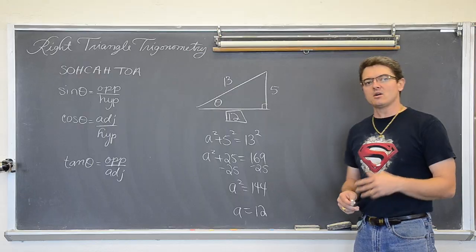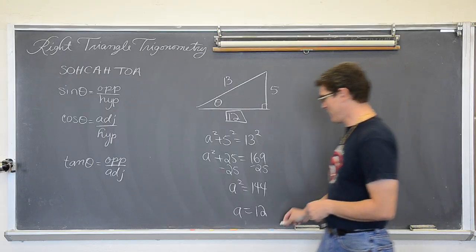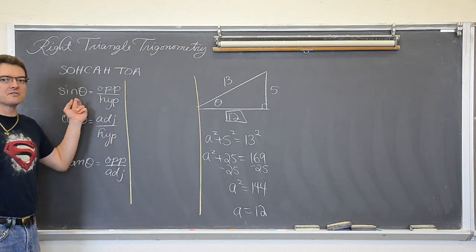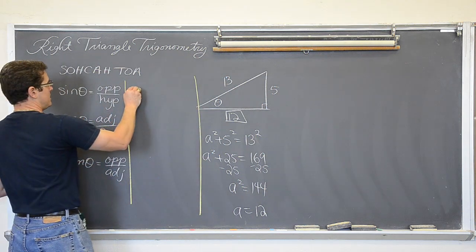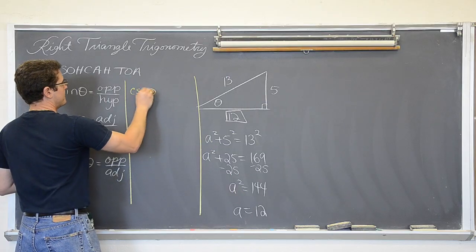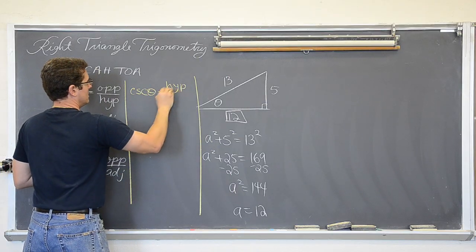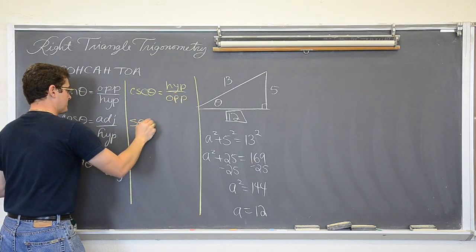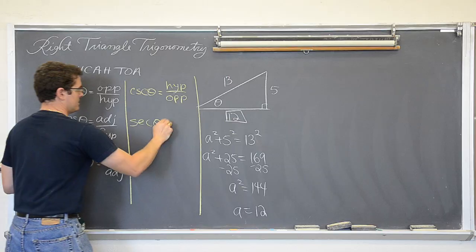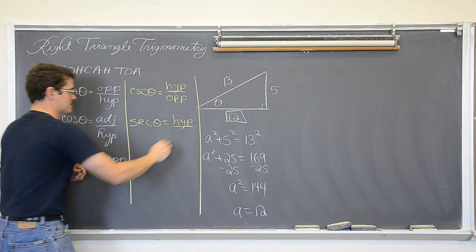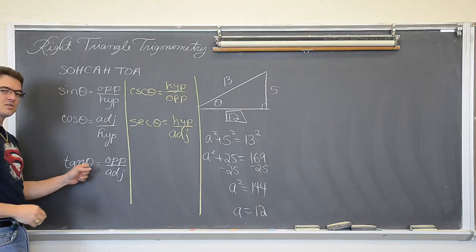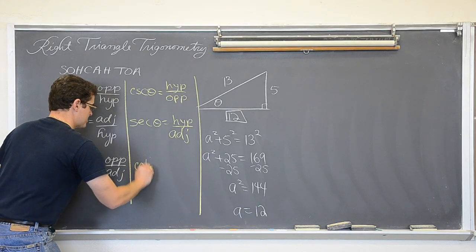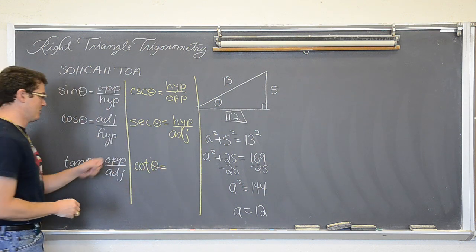Now I did say that we want to find all six trig functions. What is the reciprocal of sine? It is the cosecant, so the cosecant of theta is going to be hypotenuse over opposite. The reciprocal of cosine is the secant, so the secant of theta is hypotenuse over the adjacent side. And the reciprocal of tangent is cotangent, and that is adjacent over opposite.